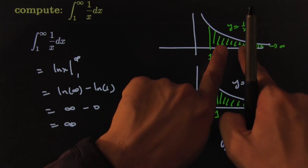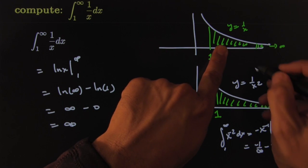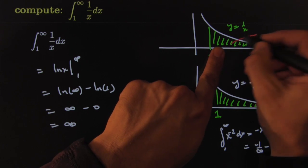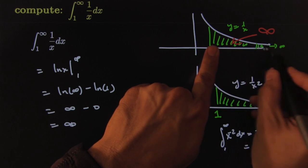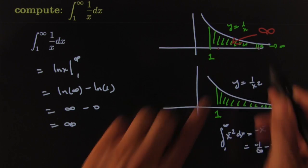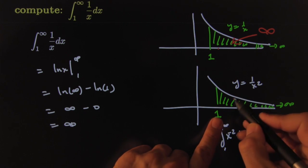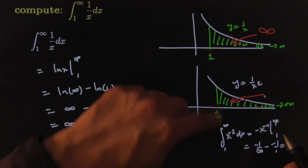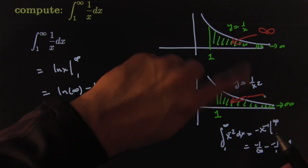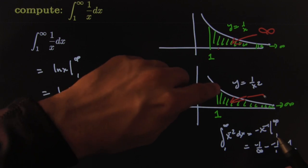We just calculated this one, which is that picture, and we just computed that integral to be infinite. This area is infinitely big. And earlier we computed this one, and this area looks a lot like that one, except this was 1 over x and this one's 1 over x squared.